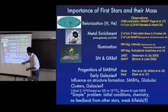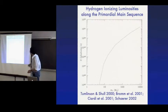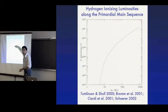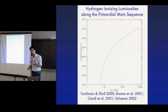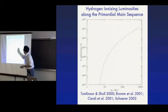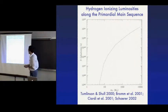Traditionally, it's been thought that magnetic fields are dynamically unimportant, at least in the initial stages. This graph shows how sensitive the ionizing photon output is to stellar mass: going from a 10 solar mass star to a 100 solar mass star, the rate at which photons can ionize hydrogen increases by about three orders of magnitude. So if the mass scale is in this range, that can have a very important consequence for the first stars' ability to reionize the universe.